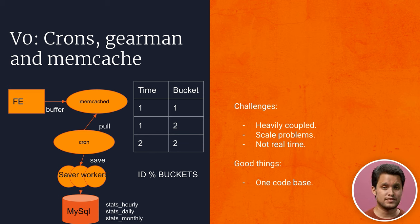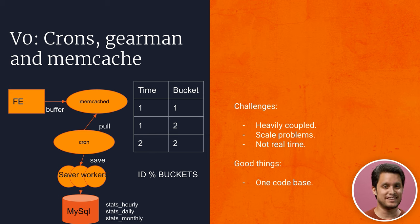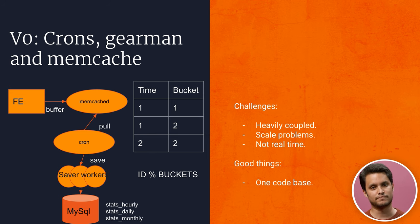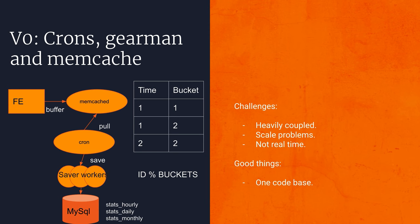The good thing about it was that everything was in one codebase — you'd change everything in one place and everything would get deployed. But once we got these scaling issues, it was apparent we needed to do something about it. And that is how V1 was born.